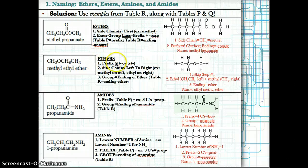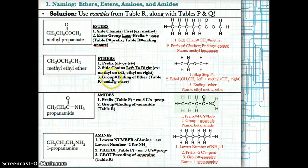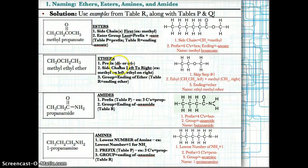Next, we have ethers. To name ethers: first, use the prefix di or tri if you have two or three of the same side chain — otherwise, skip that step. In step two, name the side chains left to right. In step three, add the group ending of 'ether' last, no matter what — as long as you have an ether, the ending will always be ether.